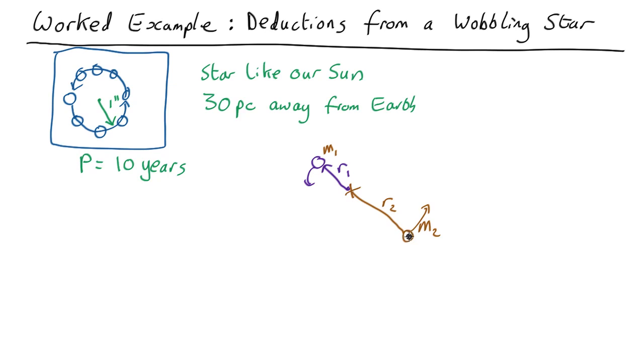At the moment we don't know whether the second object is more massive or less massive than the first object or whether it's further out or closer to the center of mass. All we know is there must be something there otherwise this couldn't go in a circle.